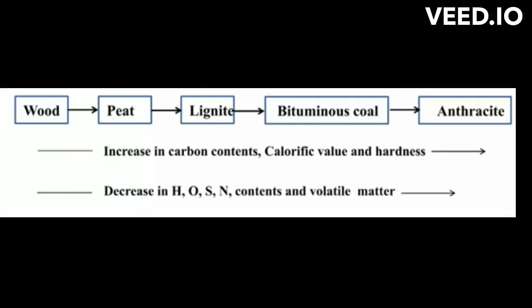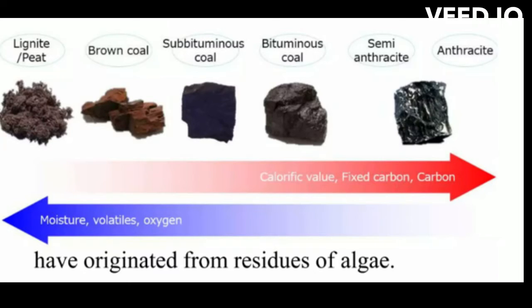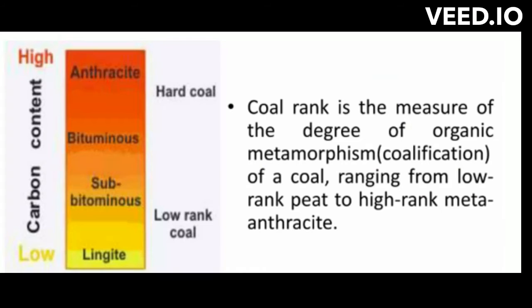Coals are mainly classified on the basis of their degree of coalification from the parent material, wood. When wood is converted into coal, there is a gradual increase in the concentration of carbon and a decrease in the percentage of oxygen and nitrogen. Coal is given a ranking depending upon the carbon content, from wood to anthracite.